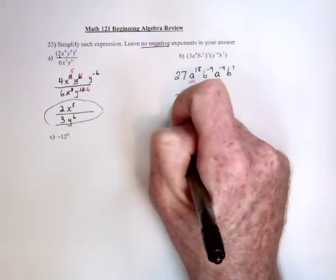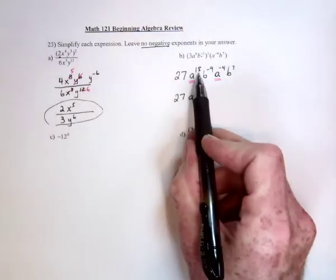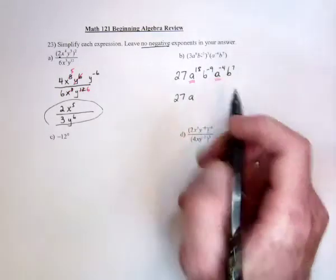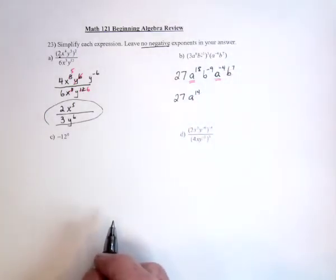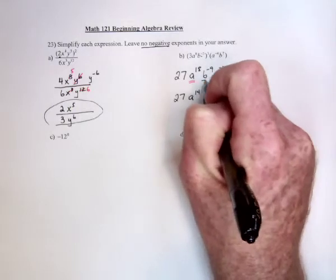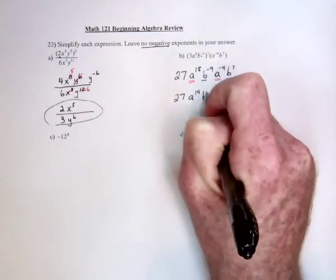So, the 27 will stay there. And then, a to the, so it's got 18 minus 4 is 14. And then, do the same thing with the b's. So, b to the negative 9, combined with b to the 7, leaves b to the negative 2.